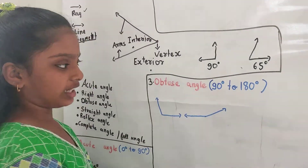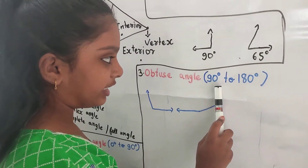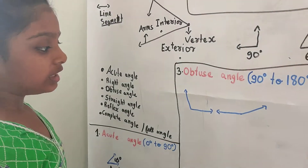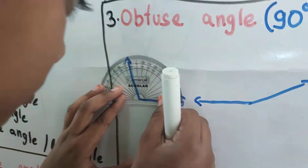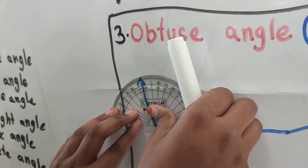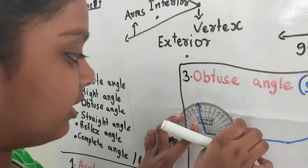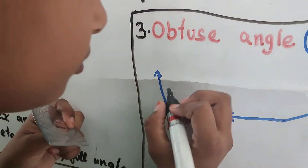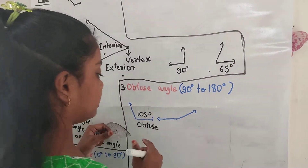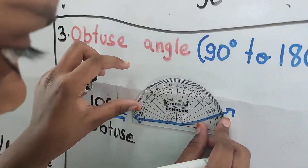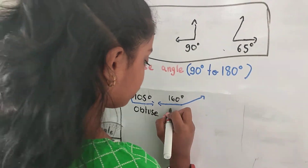Now, let us see the obtuse angle. An obtuse angle is the angle between 90 degrees to 180 degrees. I have given some examples — let us measure them. It is 105 degrees — I had measured on the outer line. So, it is 105 degrees. It is an obtuse angle. Let us measure this one. It is 160 degrees, so it is also an obtuse angle.